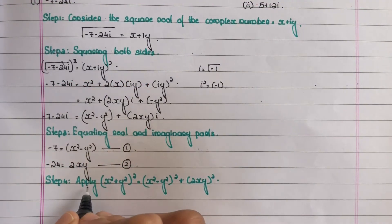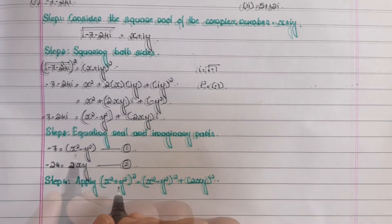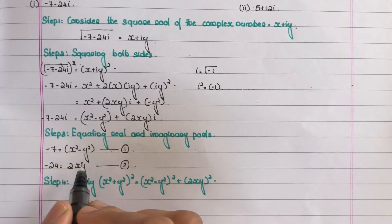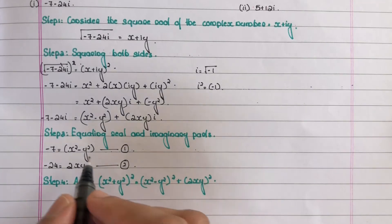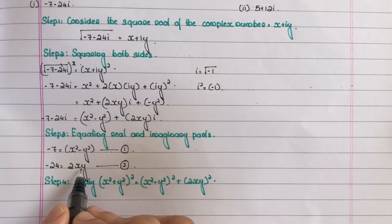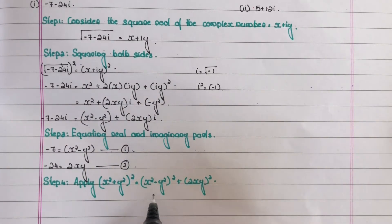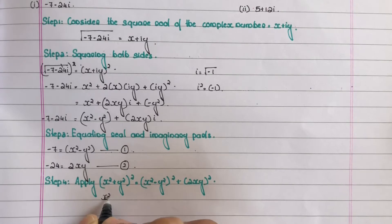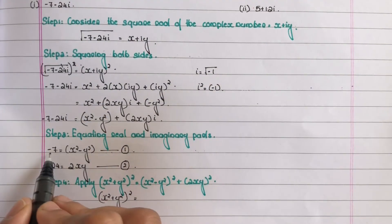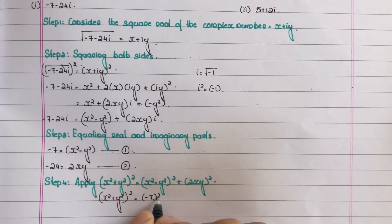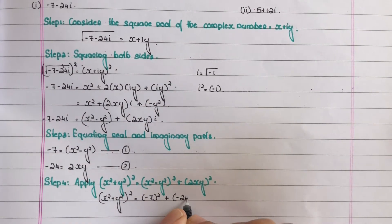Step 4: apply the identity — x² + y² whole squared equals (x² minus y²)² plus (2xy)². We substitute from equations 1 and 2: x² minus y² equals minus 7, and 2xy equals minus 24. So x² + y² whole squared equals (minus 7)² plus (minus 24)².